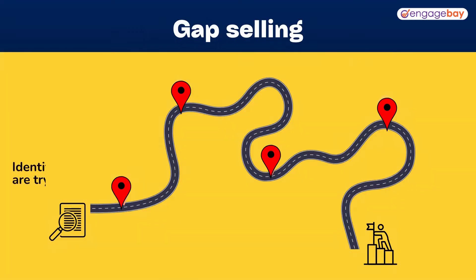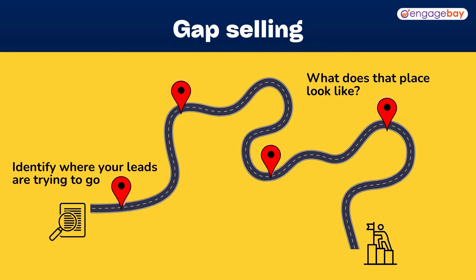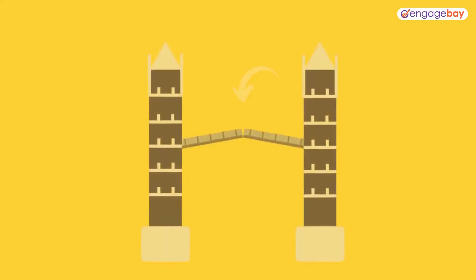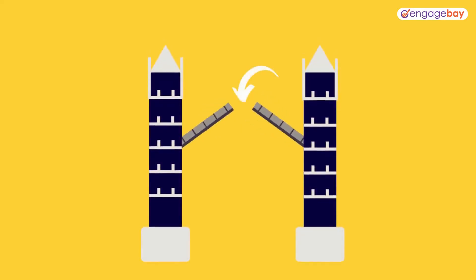For the future scenario, you want to find out where they're trying to go, what that place looks like, and how it makes them feel. And finally, you want to look at the gap between the two — how far are they from where they want to go, and can you help them bridge that gap? How?